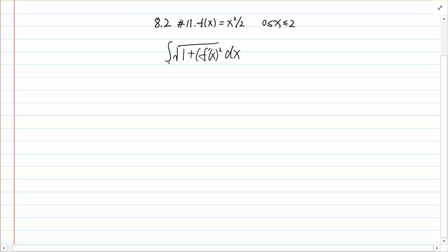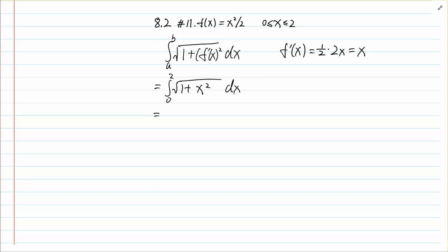This is the equation we are going to use, so we will have the integral from 0 to 2 of the square root of 1 plus, and we need to get f prime of x here, so it's 1 over 2 times 2x equals x, then x squared dx. Then we need to use our calculator to get the answer.